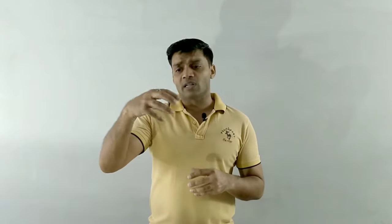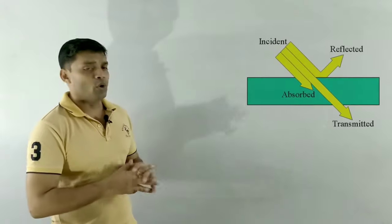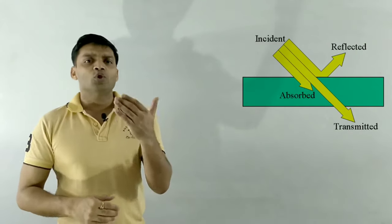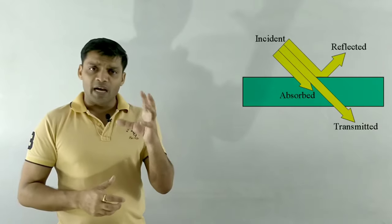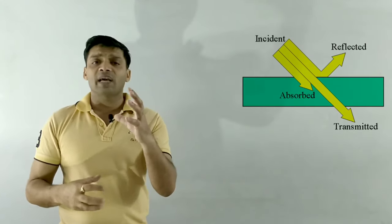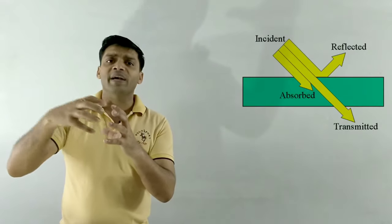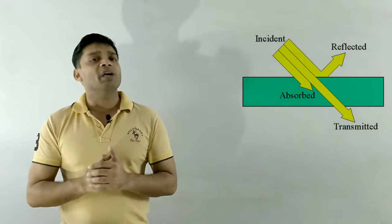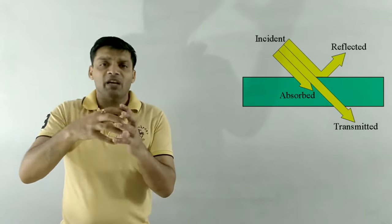We will first discuss black body radiation, but even before we start, you should know how light interacts when it falls over any matter. When light radiations fall on a matter, there can be three actions observed. The first is that some part of the radiation may be absorbed by that body. The second possibility is that some part of the radiation may be reflected by that body.